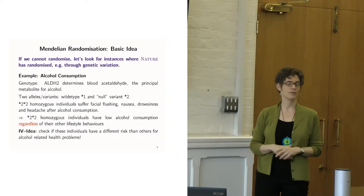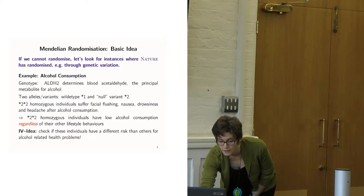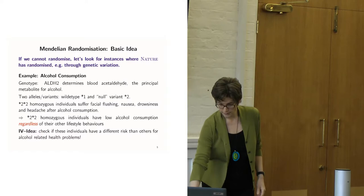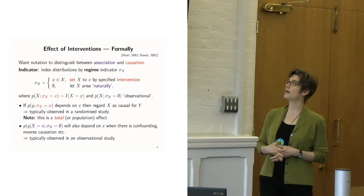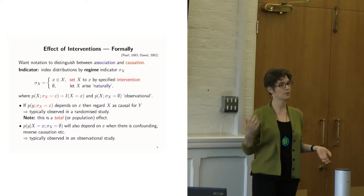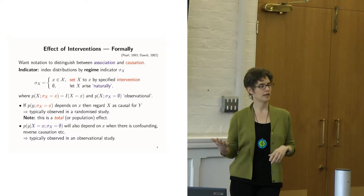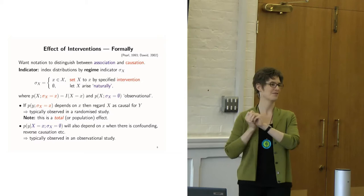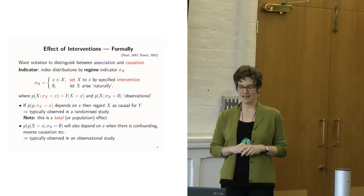So if we see that these individuals — those with the gene variant — have different risks, typically lower risks for all kinds of things, then we have some evidence that alcohol is doing something, or at least that not drinking improves health. I'm going to use what's called the decision-theoretic approach. You have different ways of formalizing causality — potential outcomes in the medical statistics literature, the do-operator in artificial intelligence, and if you work with Philip, the decision-theoretic approach.